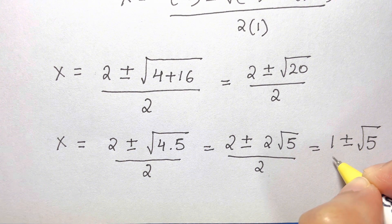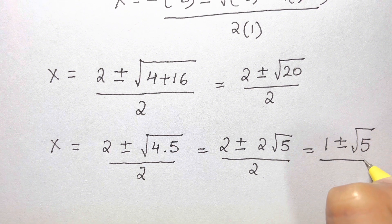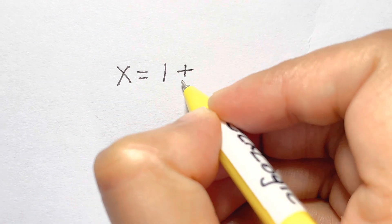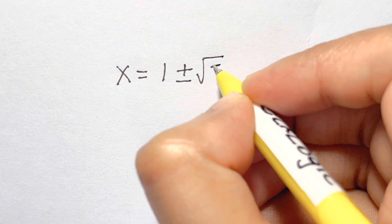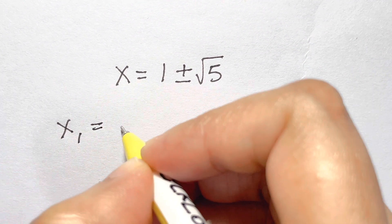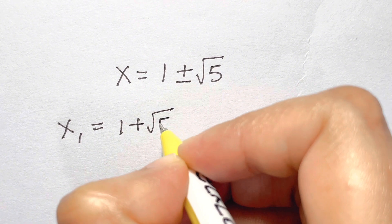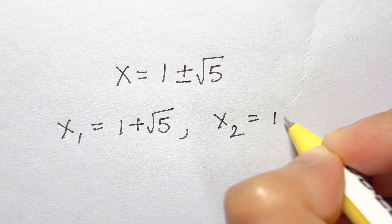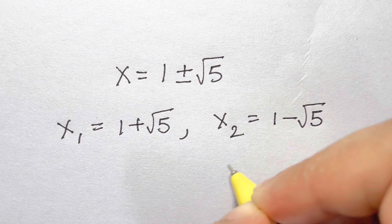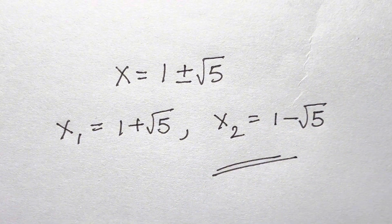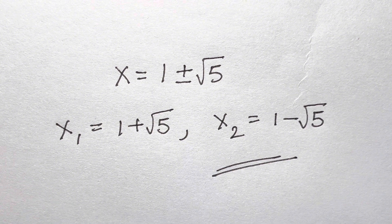So the value of x is 1 plus or minus square root of 5. That gives us two values: x = 1 + √5 and x = 1 − √5. You've found two values of x. Thank you so much, bye bye, take care!